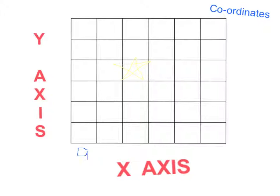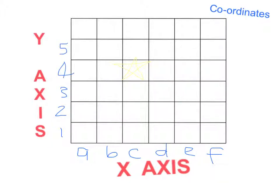So here's A, B, C, D, E, and F for the x-axis. And for my y-axis, I'm going to label them with numbers: 1, 2, 3, 4, 5, and 6. You can see with those coordinates, I've labelled them in line with the squares. They're not on the line — they're in each of the spaces of the squares.